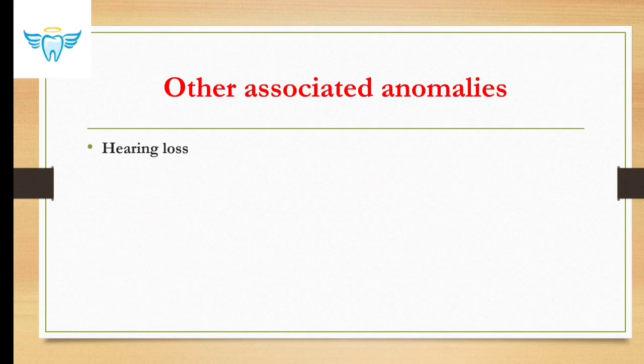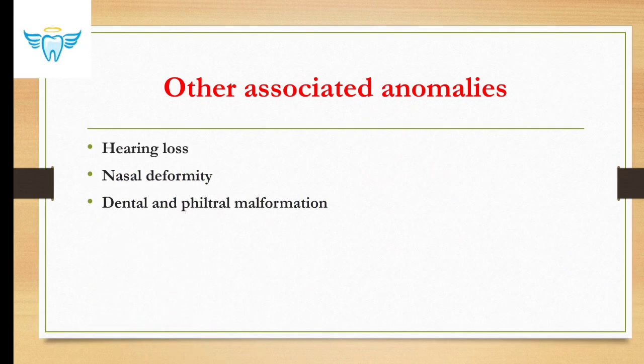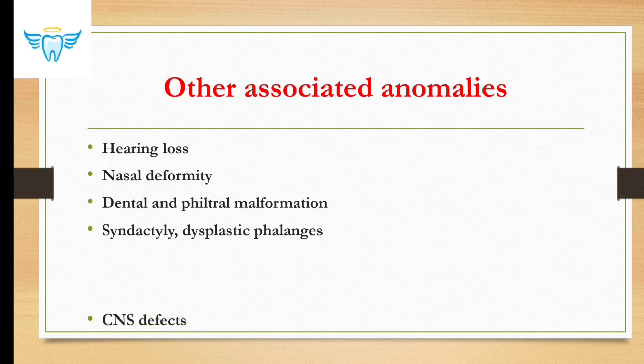Other associated anomalies in Pierre Robin include hearing loss, nasal deformity, dental and philtral malformation, syndactyly, dysplastic phalanges, and CNS defects like mental retardation.